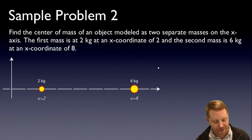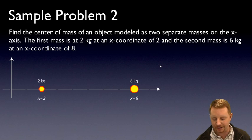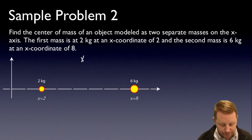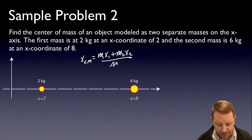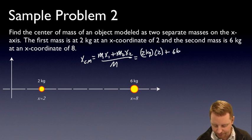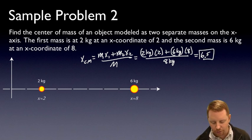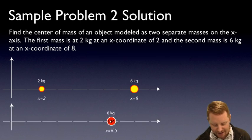Let's take a look at a sample problem. In the x-dimension, we're asked to find the center of mass of an object modeled as two separate masses on the x-axis. The first mass is 2 kilograms at an x-coordinate of 2, and the second mass is 6 kilograms at an x-coordinate of 8. The x center of mass is m1*x1 plus m2*x2 divided by the total mass: 2 kg times 2, plus 6 kg times 8, over 8 kg total. That's 4 plus 48, which is 52 over 8, giving us 6.5. So we can draw the center of mass as just being an 8-kilogram particle at an x-position of 6.5.